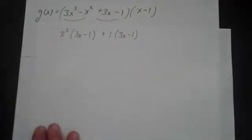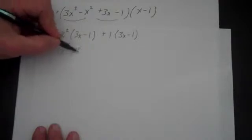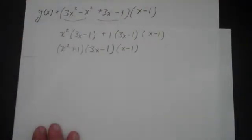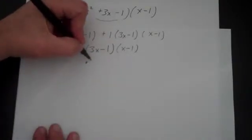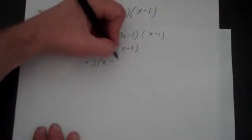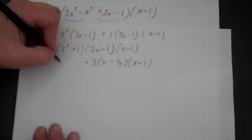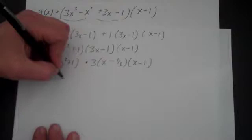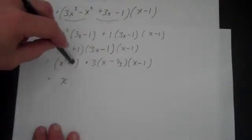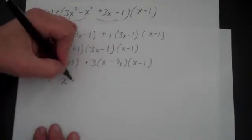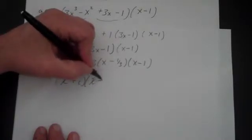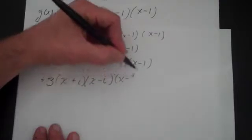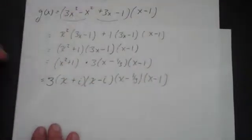Whether you write it down in each step or not is up to you. That's going to be (x² + 1)(3x - 1). I'm going to take a 3 out there — that's going to be (x - 1)(x - 1/3)(x² + 1). Now, remember that x² + 1 is the sum of two squares. You'll be able to factor that using imaginary numbers — that's going to be (x + i)(x - i). I'm going to put the 3 out in front. That's going to be my g(x).